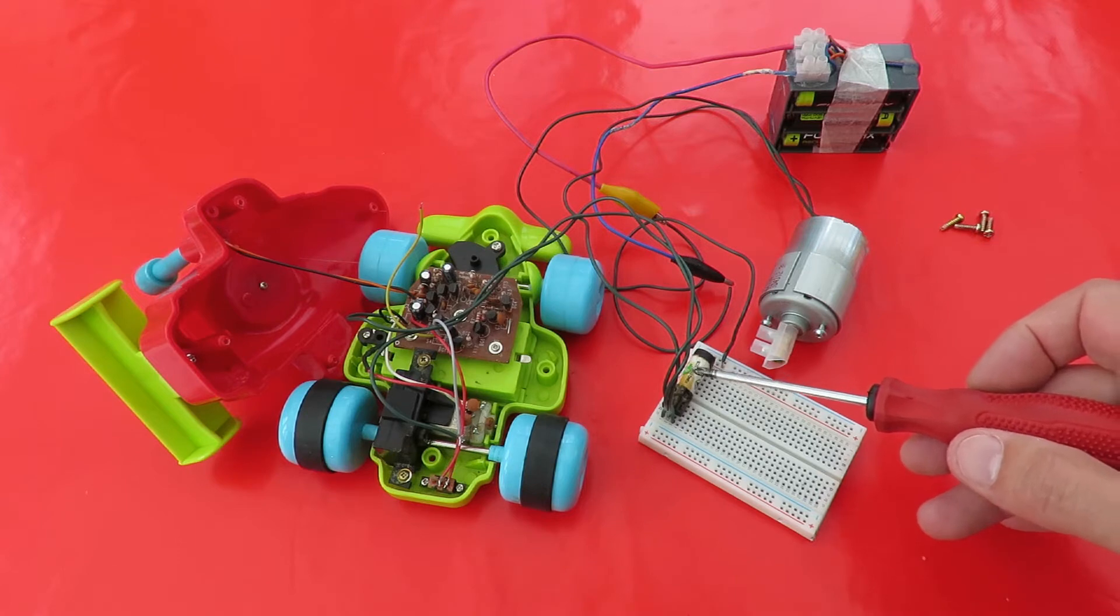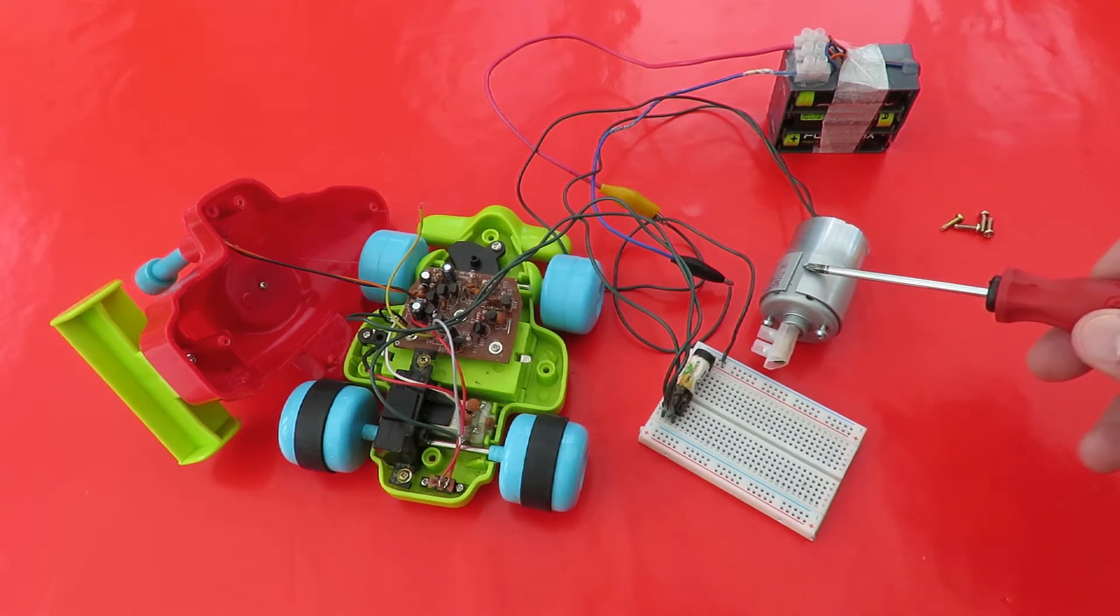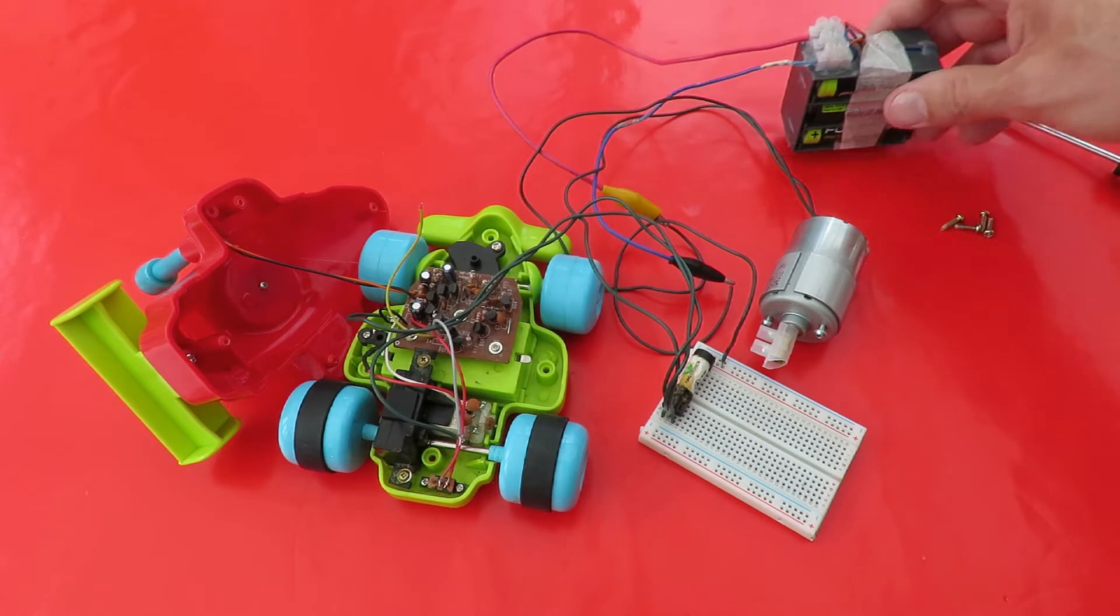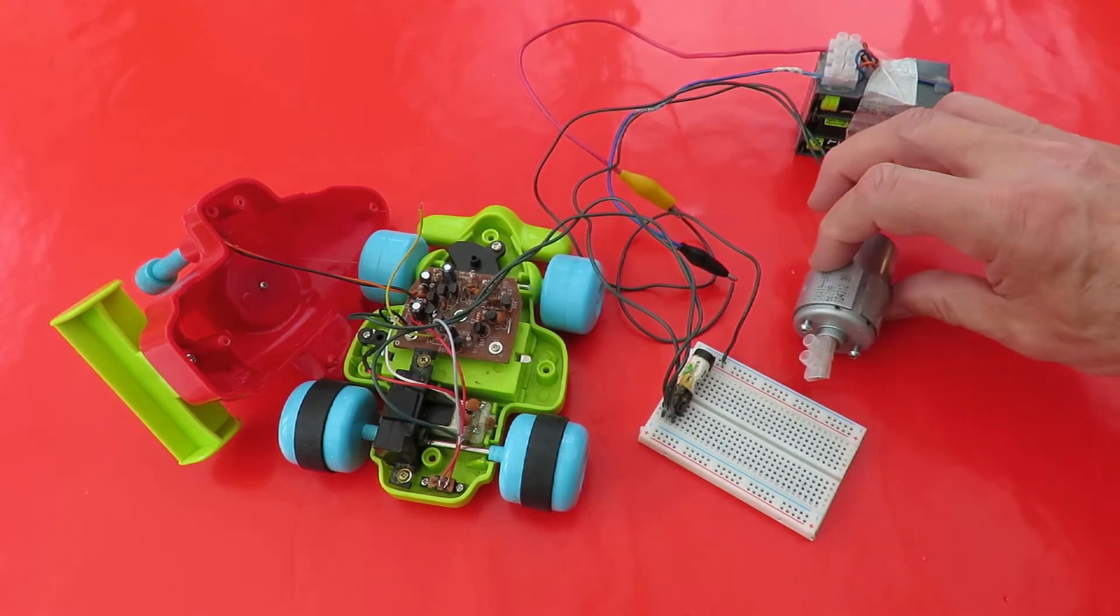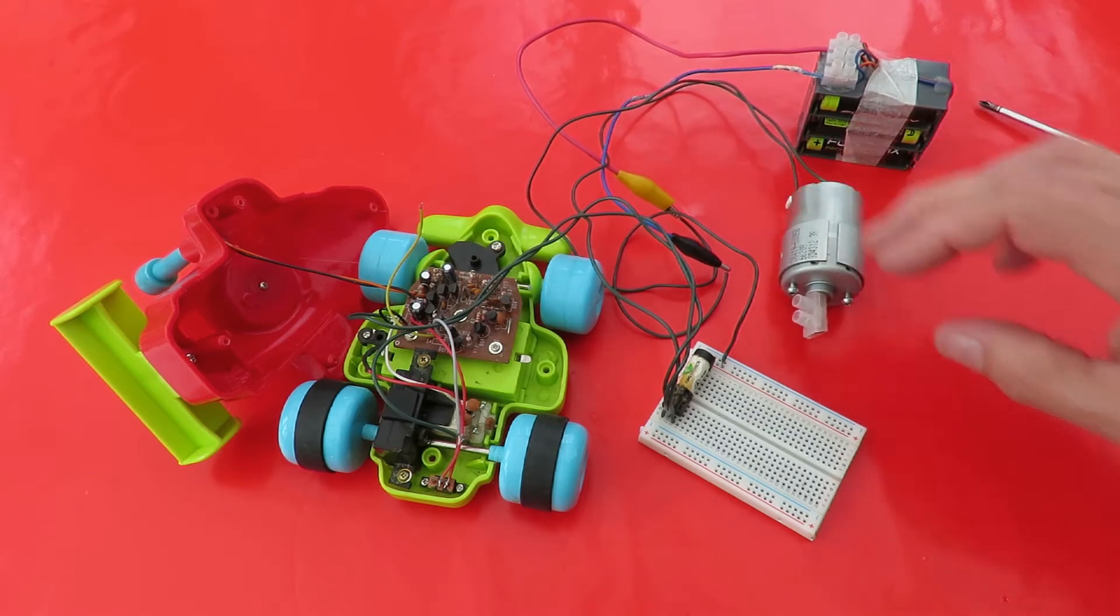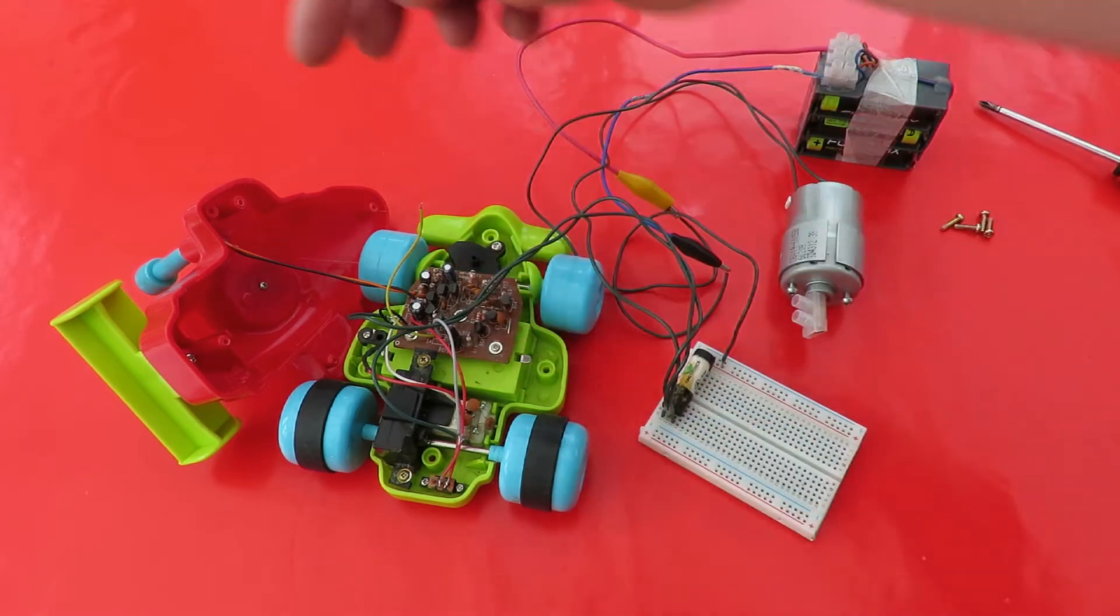When that relay operates, that will switch on this electric motor that's being powered by these six AA batteries. It actually needs a bit more than that, but it's enough to make it spin.